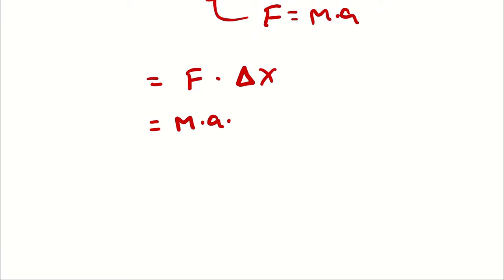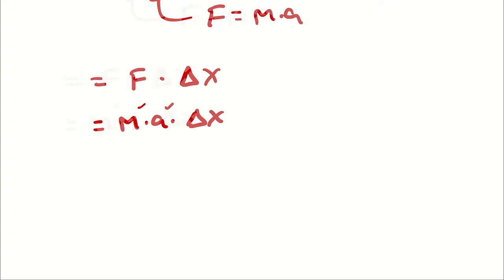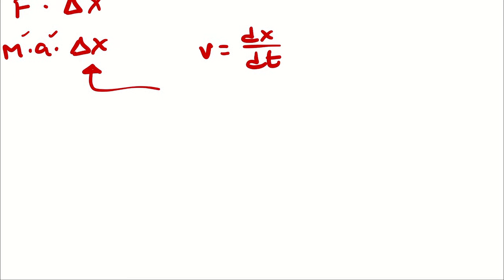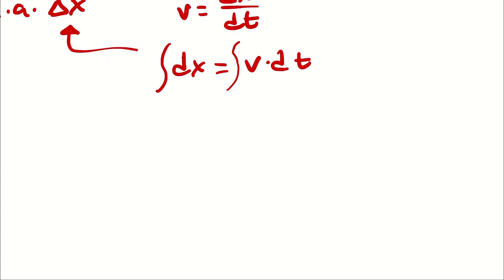Since I have mass and acceleration, I will substitute those now: mass times acceleration times our displacement, which we don't know, but we can determine. Velocity is defined as a change in position with respect to time, so I could write dx as v dt and integrate both sides. The left-hand side is just delta x, and the right-hand side we have to evaluate because our velocity is changing.